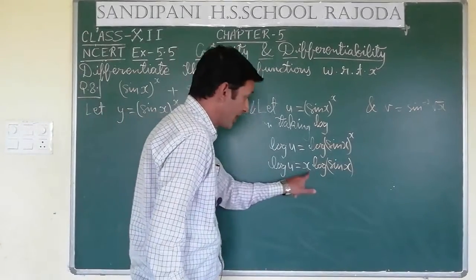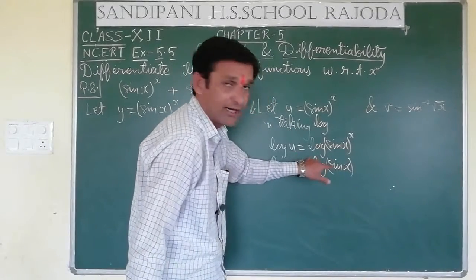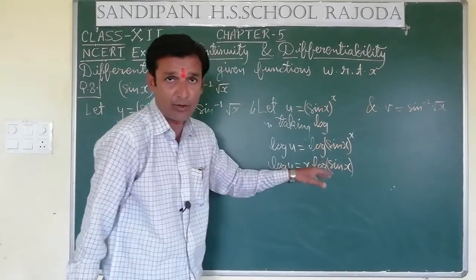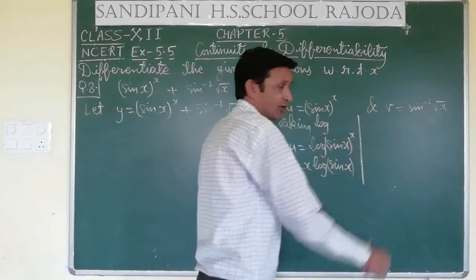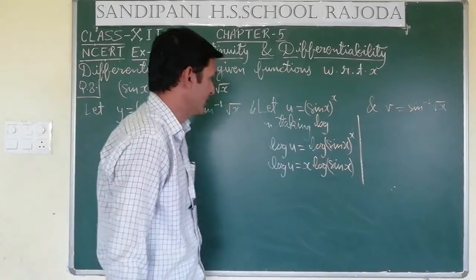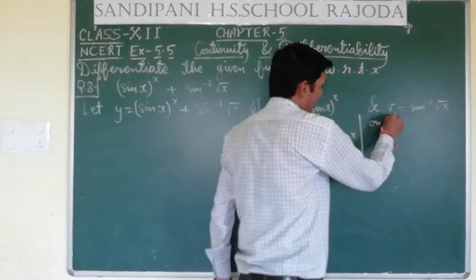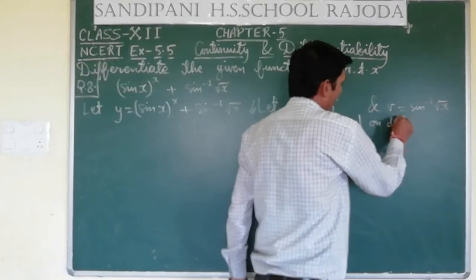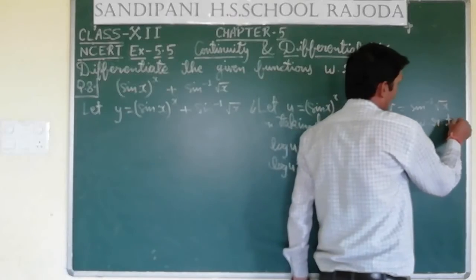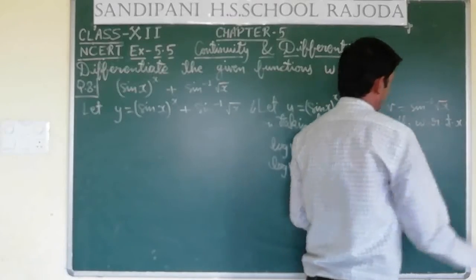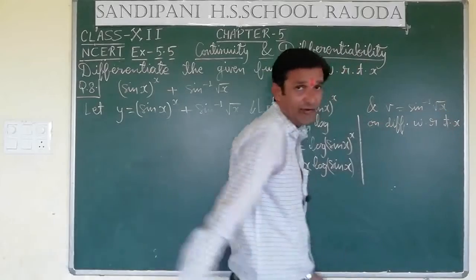So on taking log of the u part: log u equals log of (sin x) raised to the power x. This becomes log u equal to x log(sin x), since log m raised to the power n equals n log m.